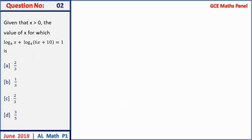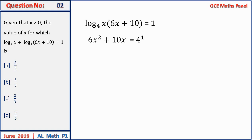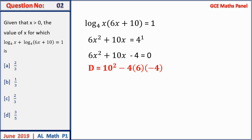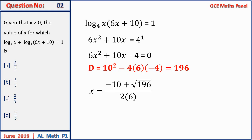Question 2: if x is strictly greater than 0, find the value of x for which the function is satisfied. Following the first law of logarithm, the bases are the same so we multiply. Converting to exponential form gives 4^1 = x(6x + 10). This becomes a quadratic with discriminant 196. The value of x, taking the positive root, simplifies to 1/3. So the answer is B.